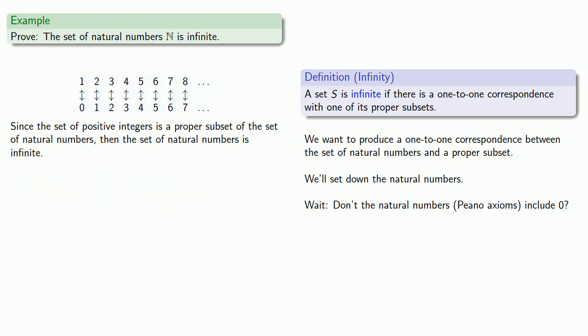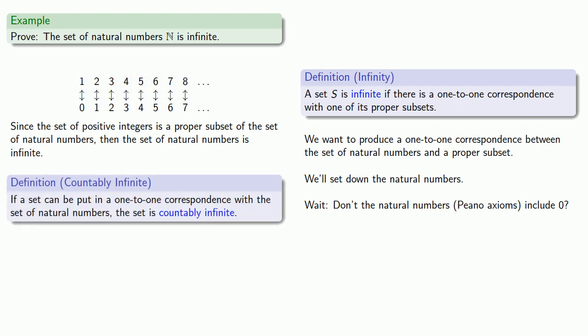We'll introduce one more idea. If the set can be put in a one-to-one correspondence with the set of natural numbers, the set is countably infinite. And we'll explain the countably later. The preceding shows the set of positive integers is countably infinite.